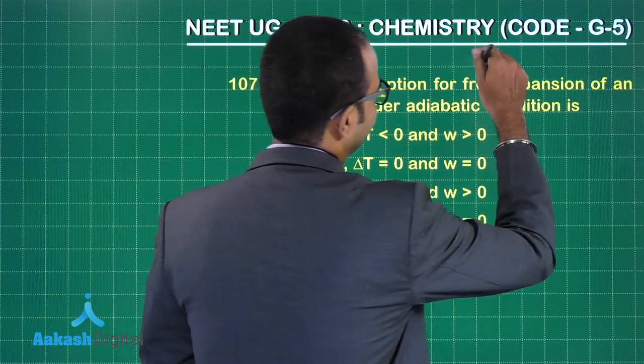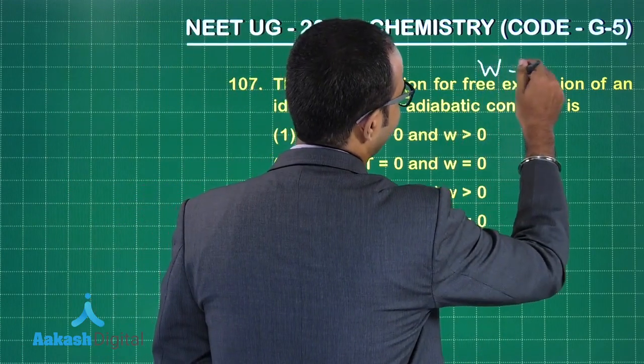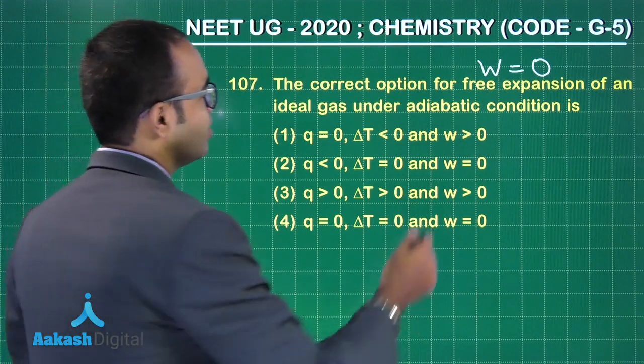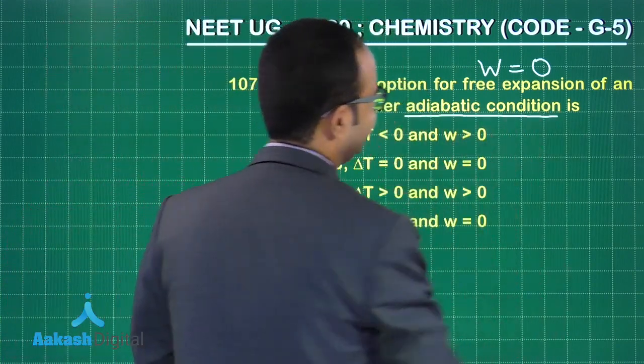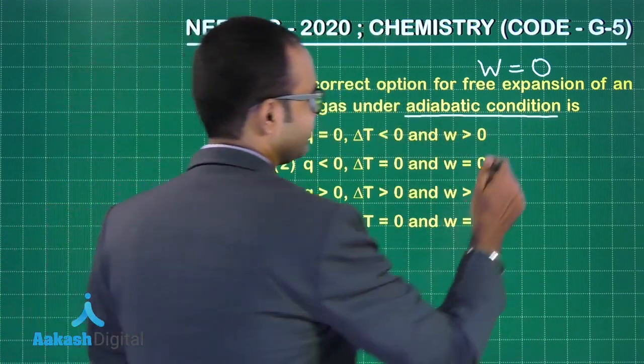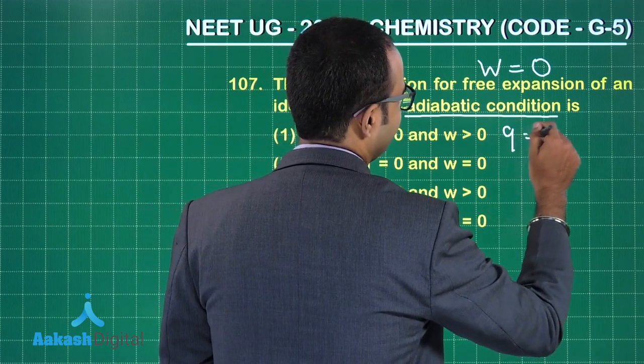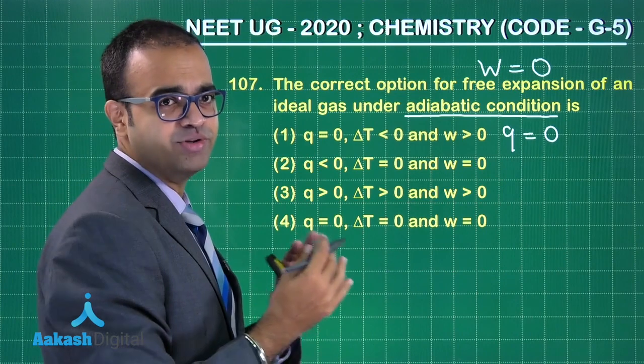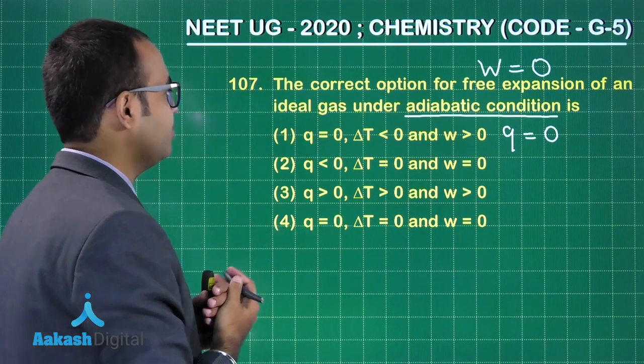When I am saying adiabatic conditions, what do I know about this? q is equal to zero. So I have already got two things: w is equal to zero and q is equal to zero. Let us look at the options now.